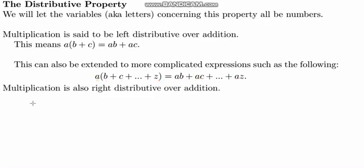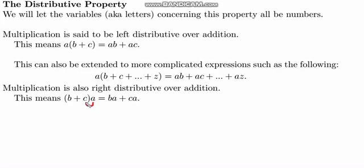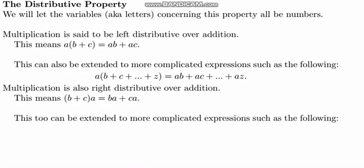Now let's look at what it means for multiplication to be right distributive over addition. If we take the quantity b plus c and multiply it by a, we bring the a over to the c term giving one term, and the a over to the b term giving another. This is what it means to be right distributive over addition, and this too can be extended to more complicated expressions.